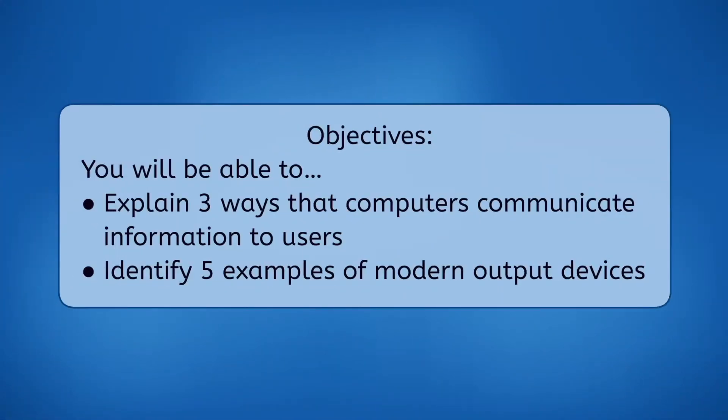Oh, no, don't worry. I can understand you just fine, Mia. Oh, hey, you're here. Ready for your first real lesson on computer skills? Since it's on my mind, I think we'll make today's lesson all about what these things are missing — a way for computers to communicate with humans, known as output devices. By the end of this lesson, you will be able to explain three ways that modern computers communicate information to users and identify five examples of modern output devices. Let's get into it.